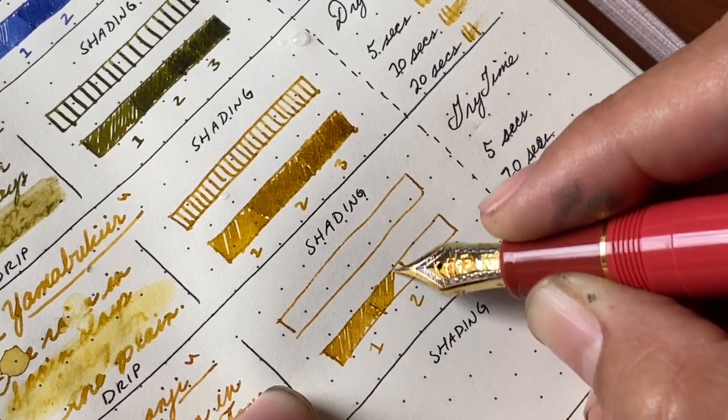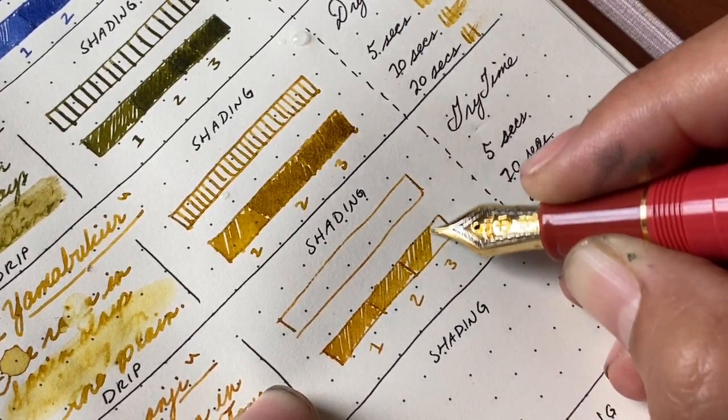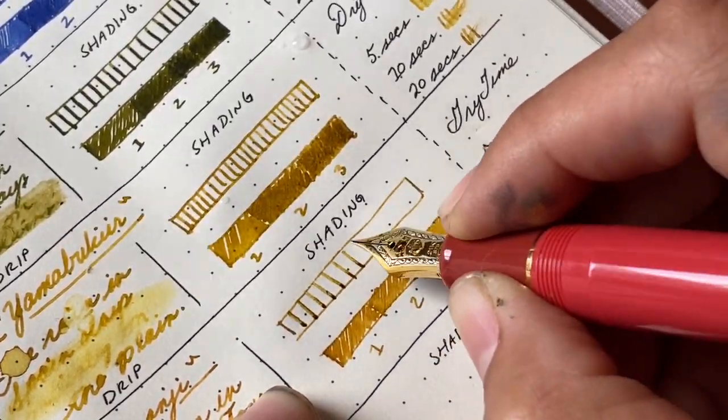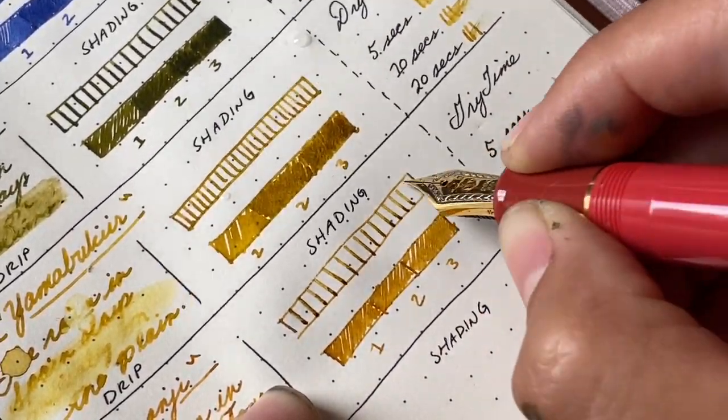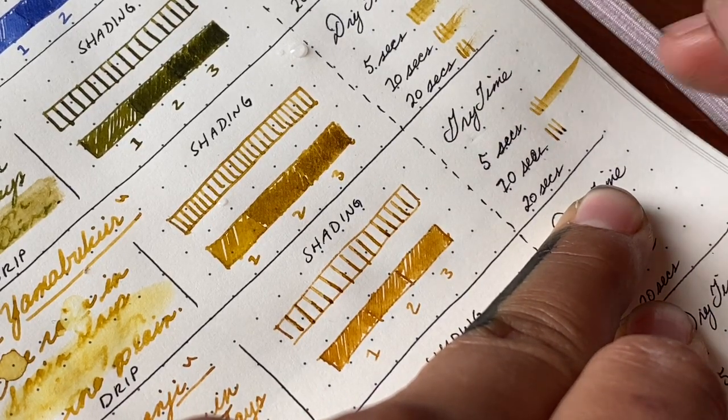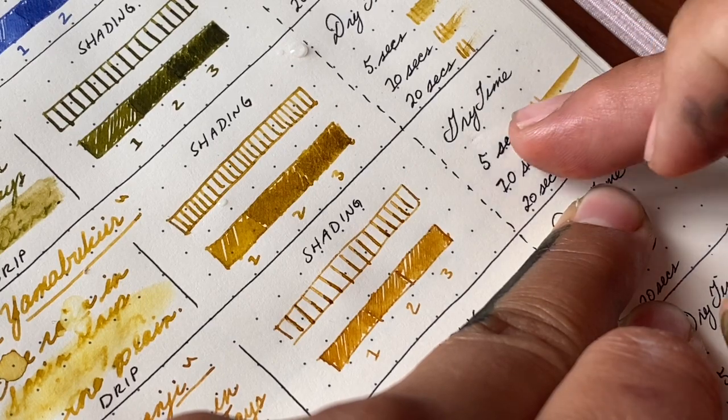Shading is when ink goes from light to dark. Generally the ink pools in a certain place and dries really dark on the bottom, and then is lighter where the ink doesn't pool.